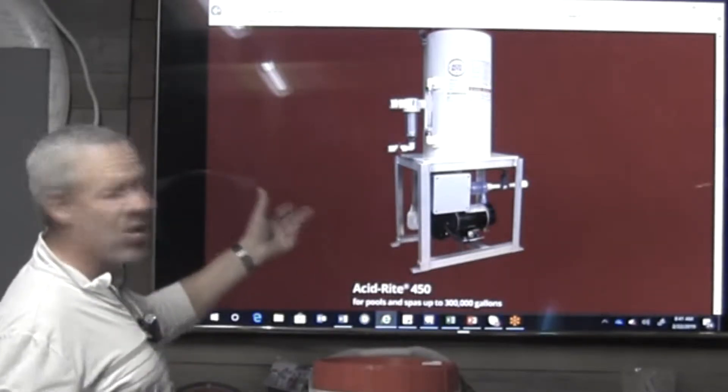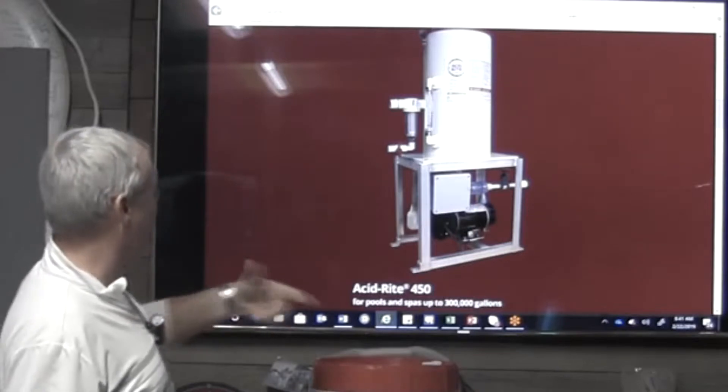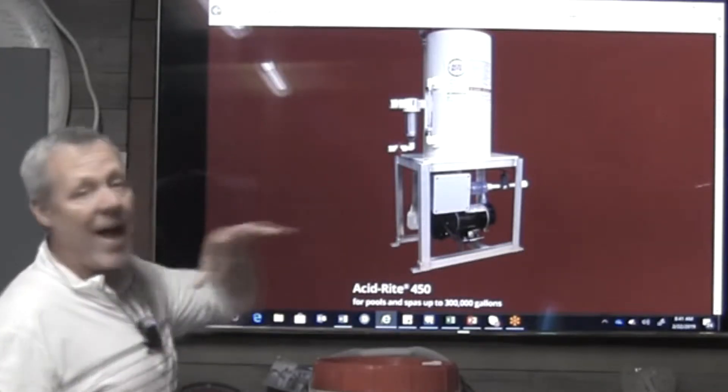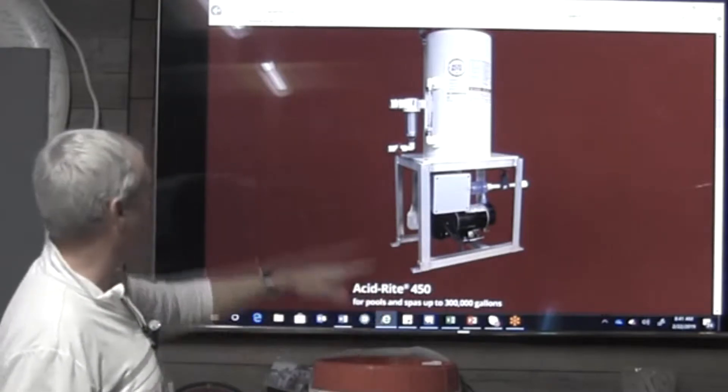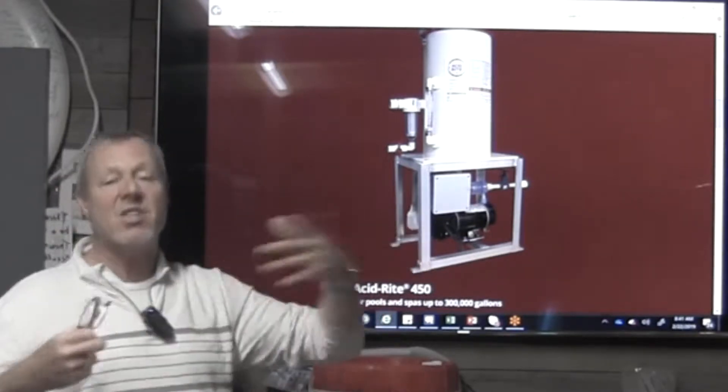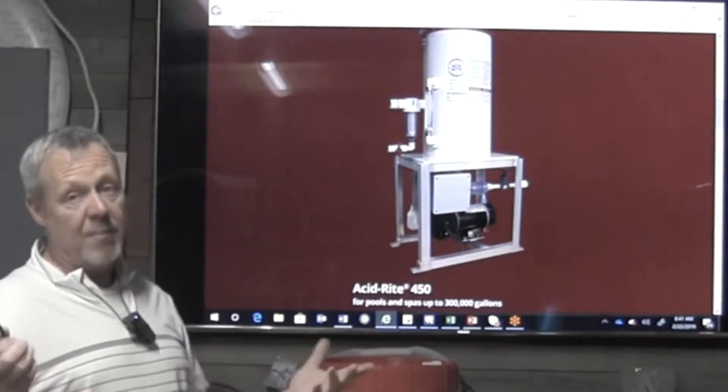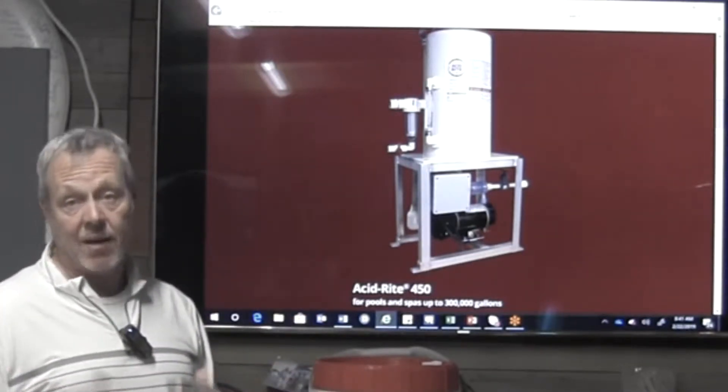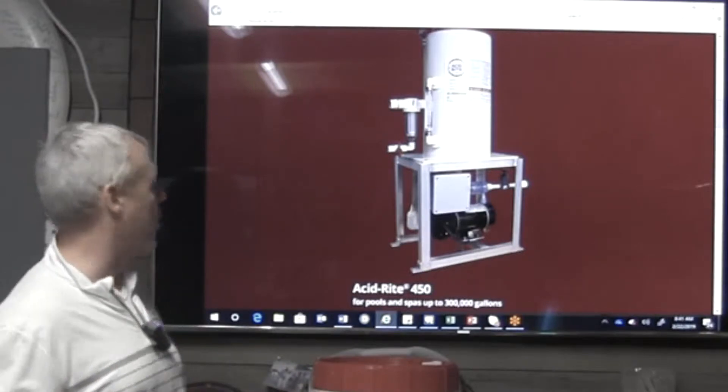These are really kind of similar to the Accutab systems. Obviously you can see the red lid and a lot of red going on because they dye the tablets red so that you wouldn't mix them up. And one of the benefits here of using this Acidrite system is to get muriatic acid out of your equipment room.